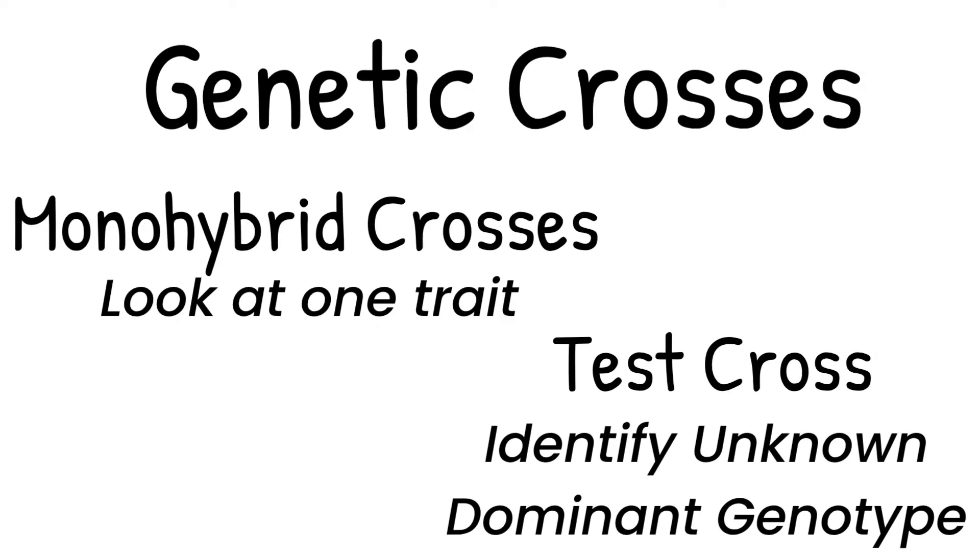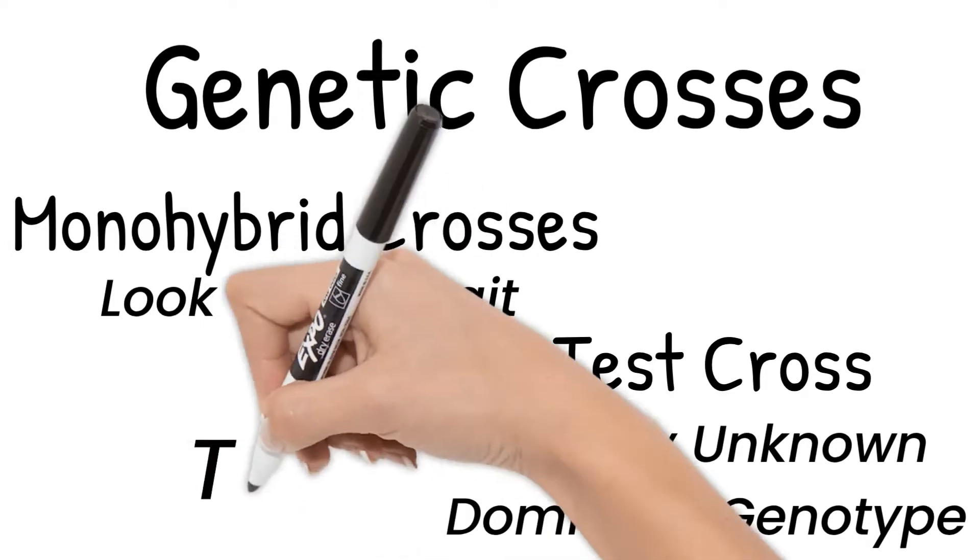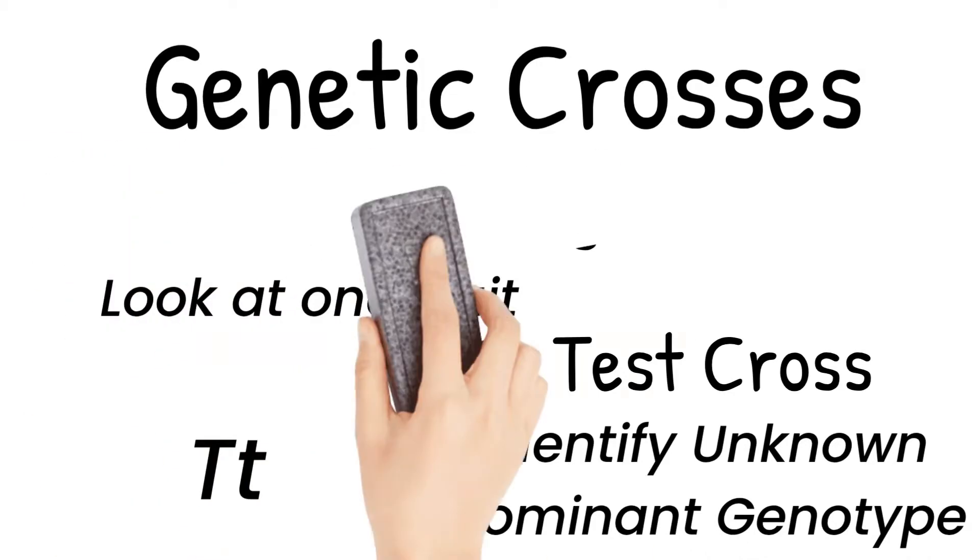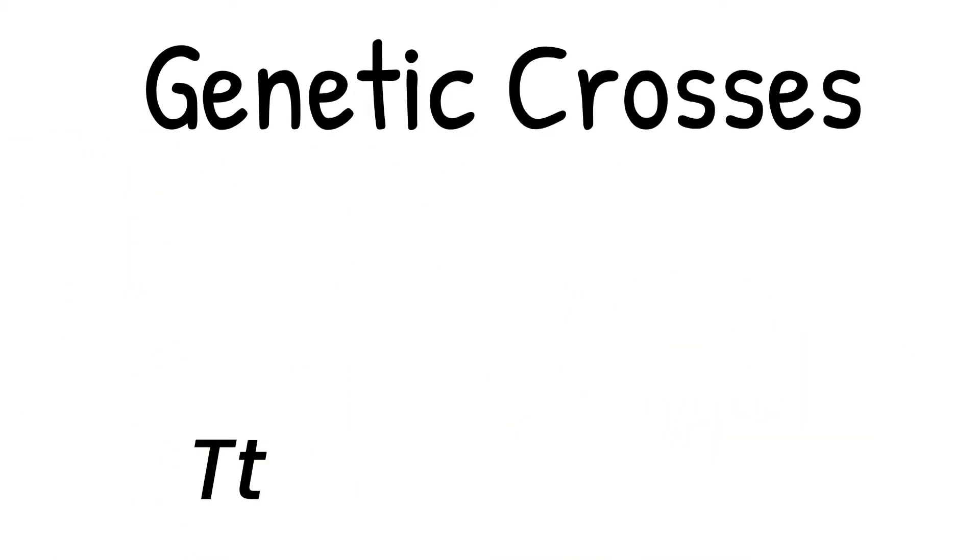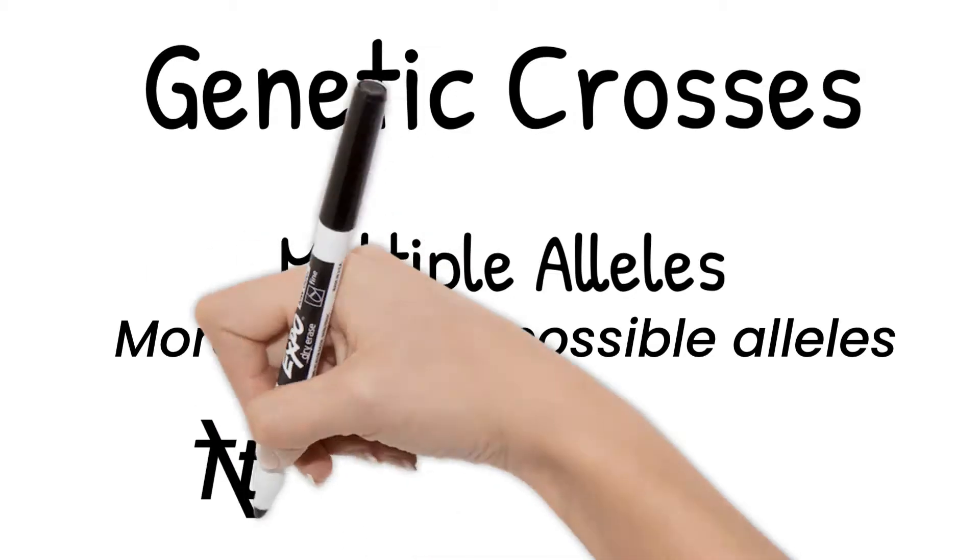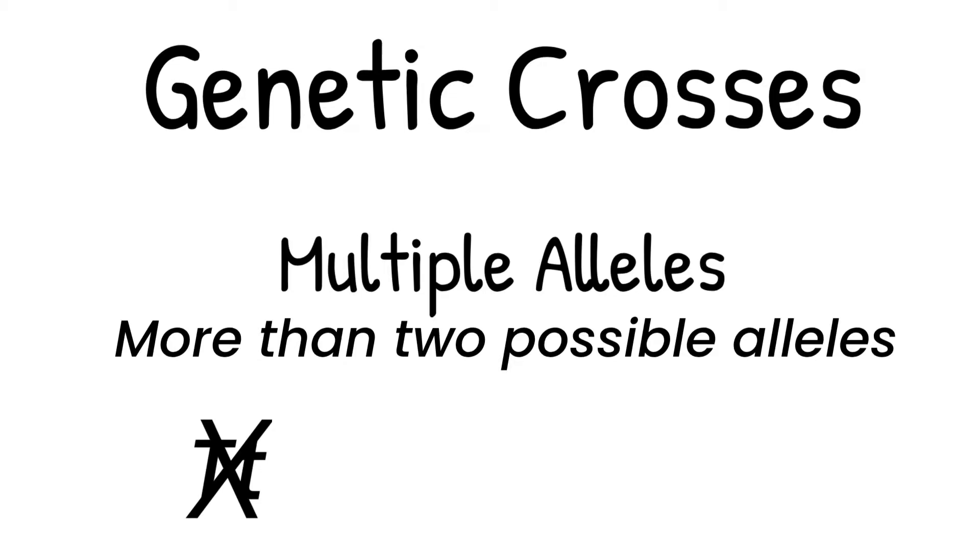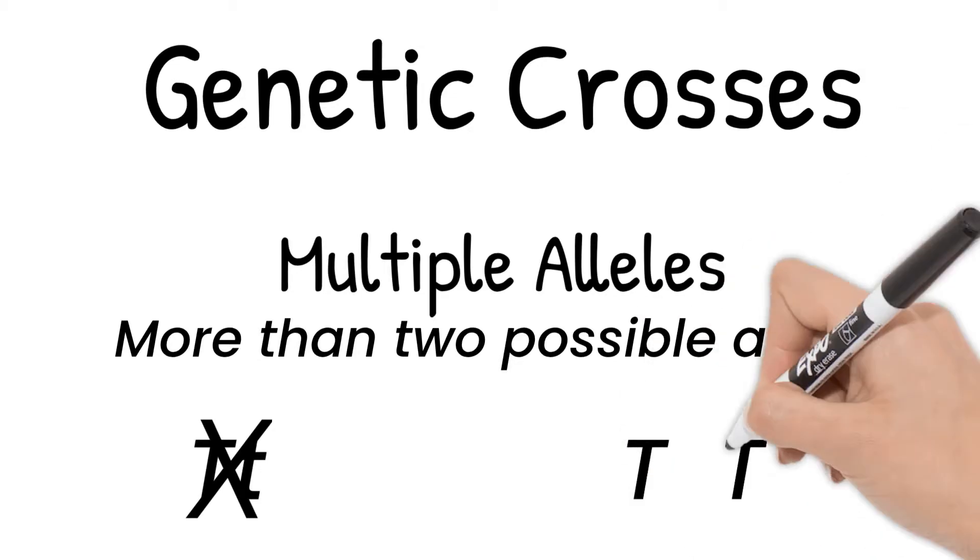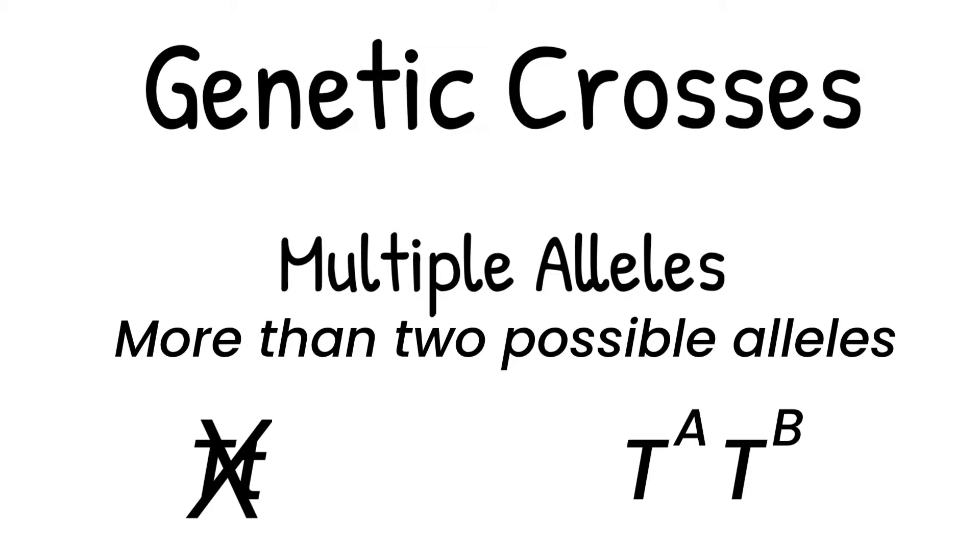So far in all of our examples, we have only looked at traits that are affected by two alleles: a dominant and a recessive. However, there are some traits that have more than two possible alleles, and these are called multiple alleles. Since there are more than two alleles involved, we cannot just use upper and lowercase letters. Instead, we use a capital letter with superscripts to identify the different alleles. Let's look at an example to better understand.